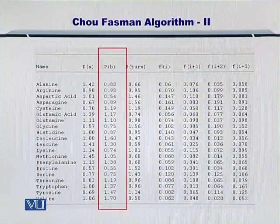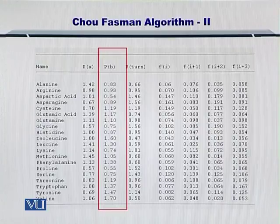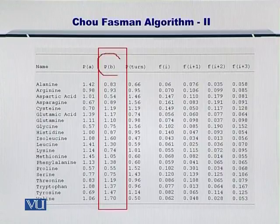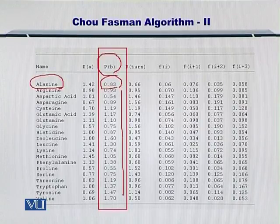Before you begin with beta sheet formation, you need to first finalize your alpha helices. To finalize your alpha helices, you need to make sure that they have a higher propensity than the beta sheets. To calculate the propensities of beta sheets, you follow the same procedure as for alpha helices. Looking at this table, the second column gives the propensities for each amino acid to form a beta sheet.